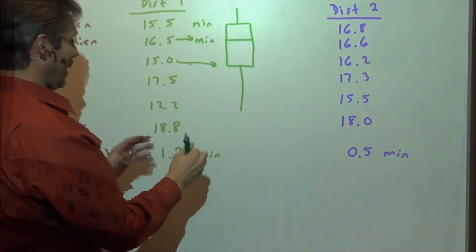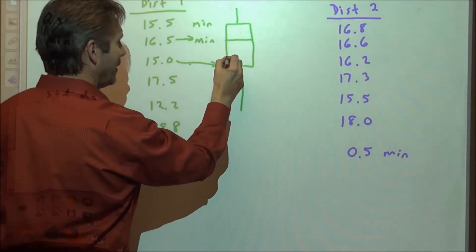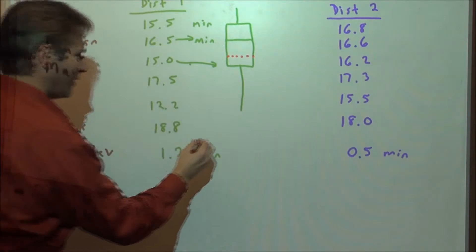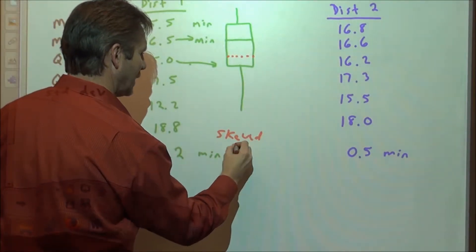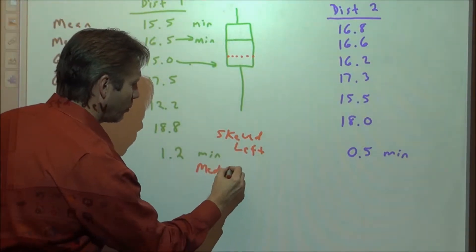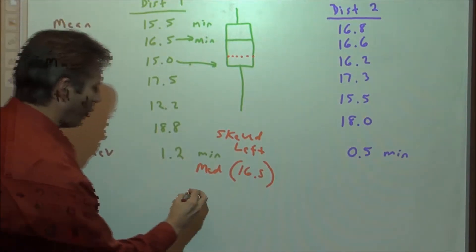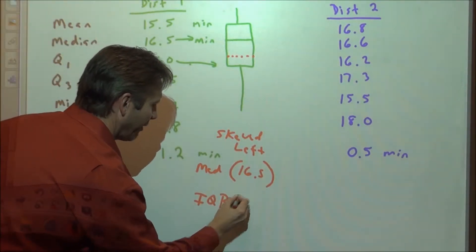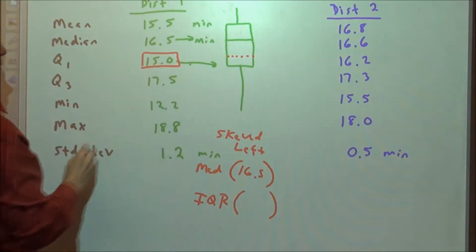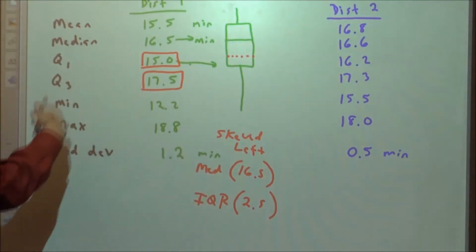We can see that that distribution tends to be skewed left, skewed towards the lower amounts. The mean is down here closer to the median, another indicator it's skewed to the left. So we would report the center as the median, which is 16.5 minutes. And we don't get to report standard deviation. We're going to report the IQR, which is the difference between this lower quartile and this upper quartile. That's 2.5 minutes.